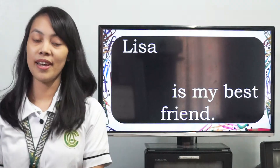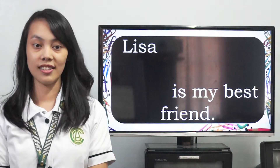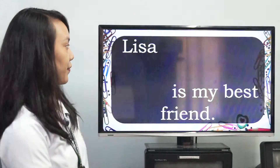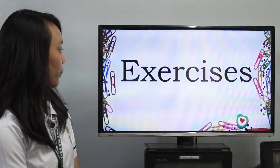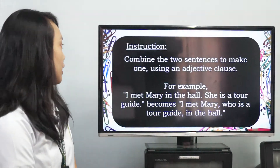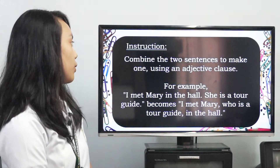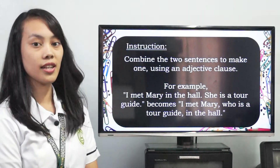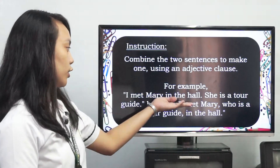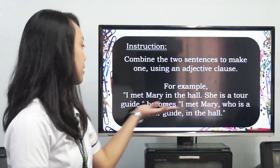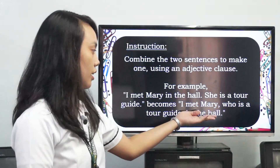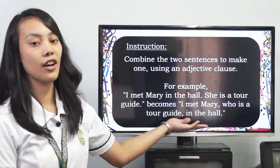That's the end of my discussion and now let's proceed to exercises. Instructions: Combine the two sentences to make one using an adjective clause. For example: I met Mary in the hall. She is a tour guide. Becomes: I met Mary, who is a tour guide, in the hall.